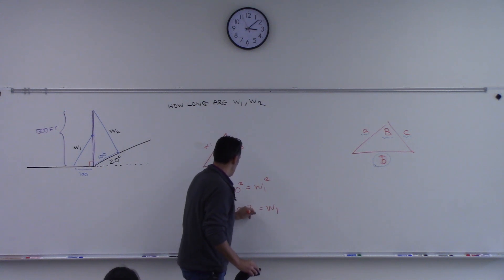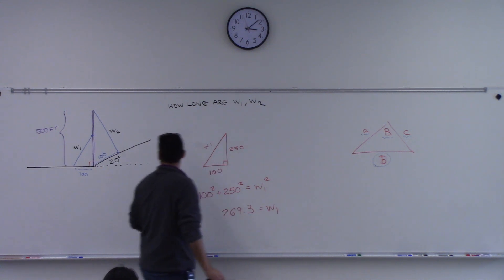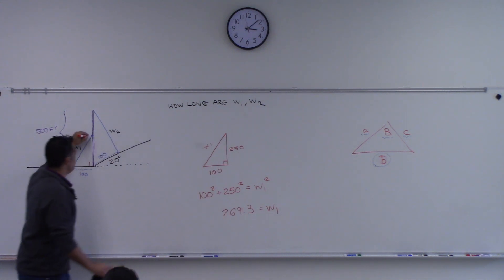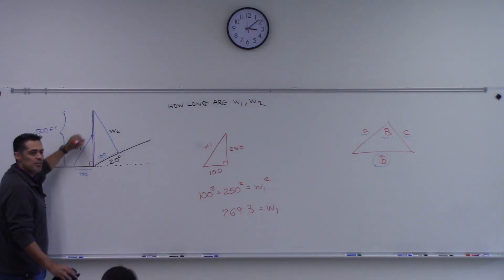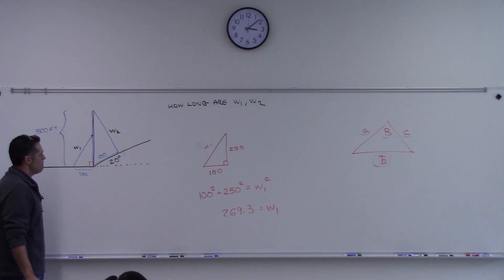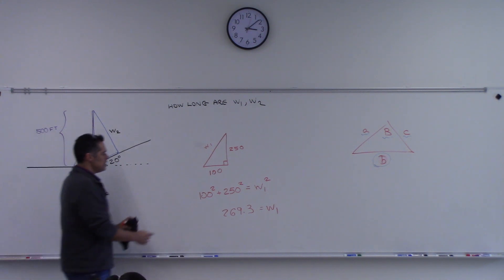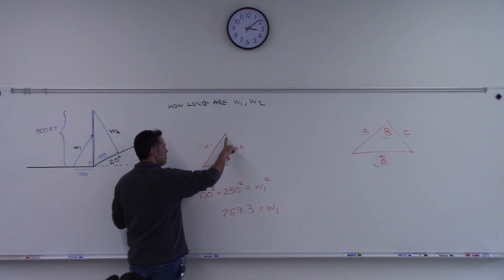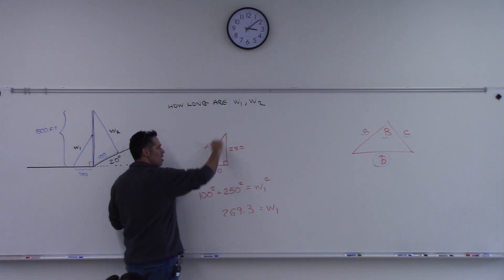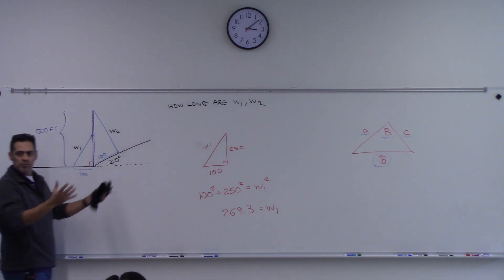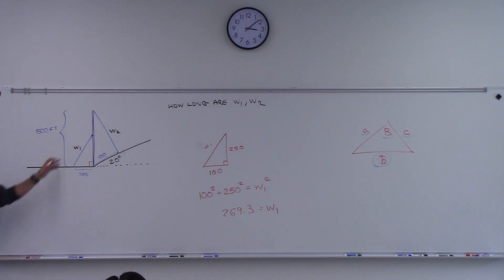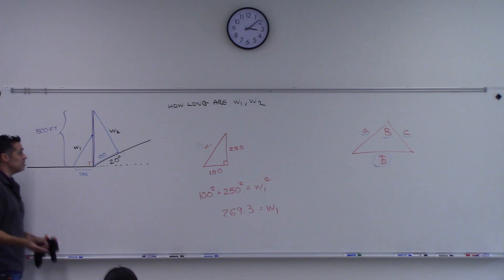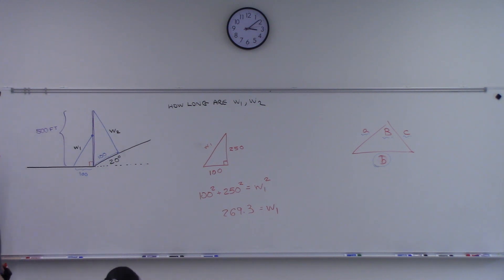That's how long this one should be. It makes sense — 269.3. I mean, that's longer than 250, so it should be longer. The first guide wire needed no law of sines or cosines. How about the other one?